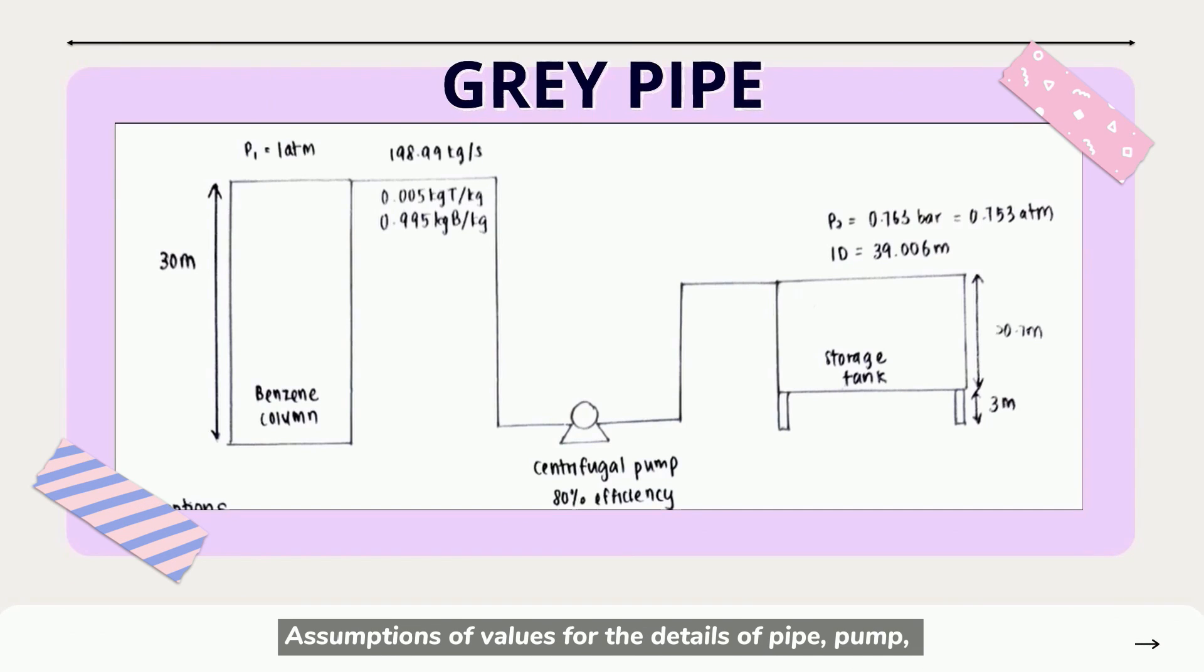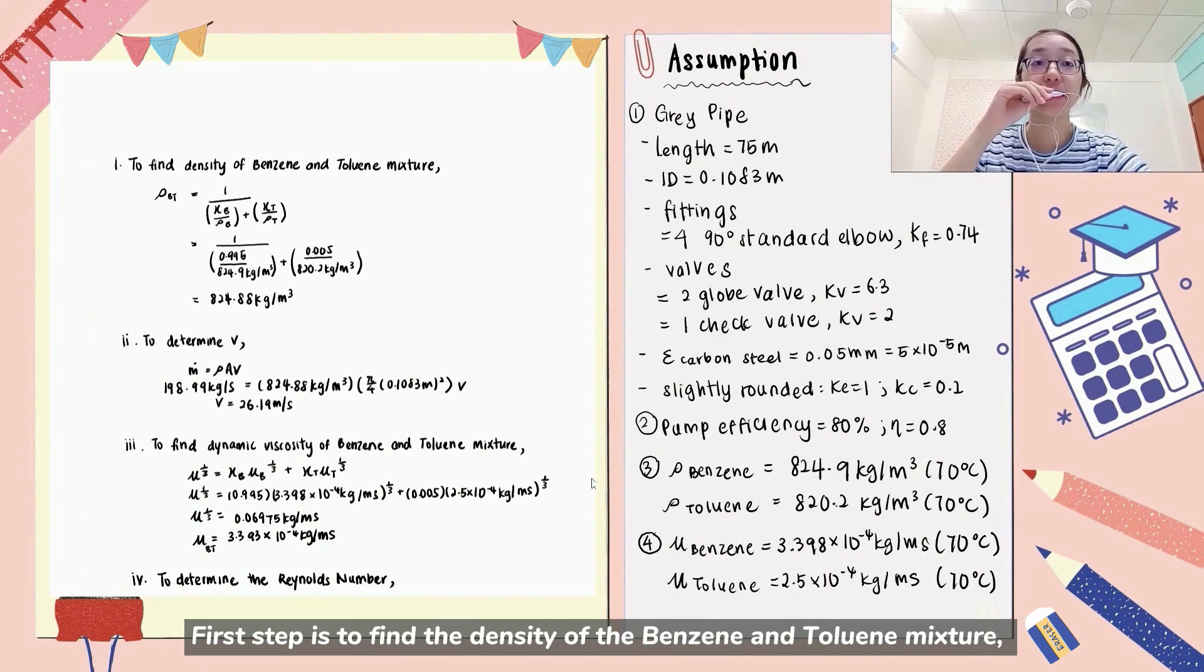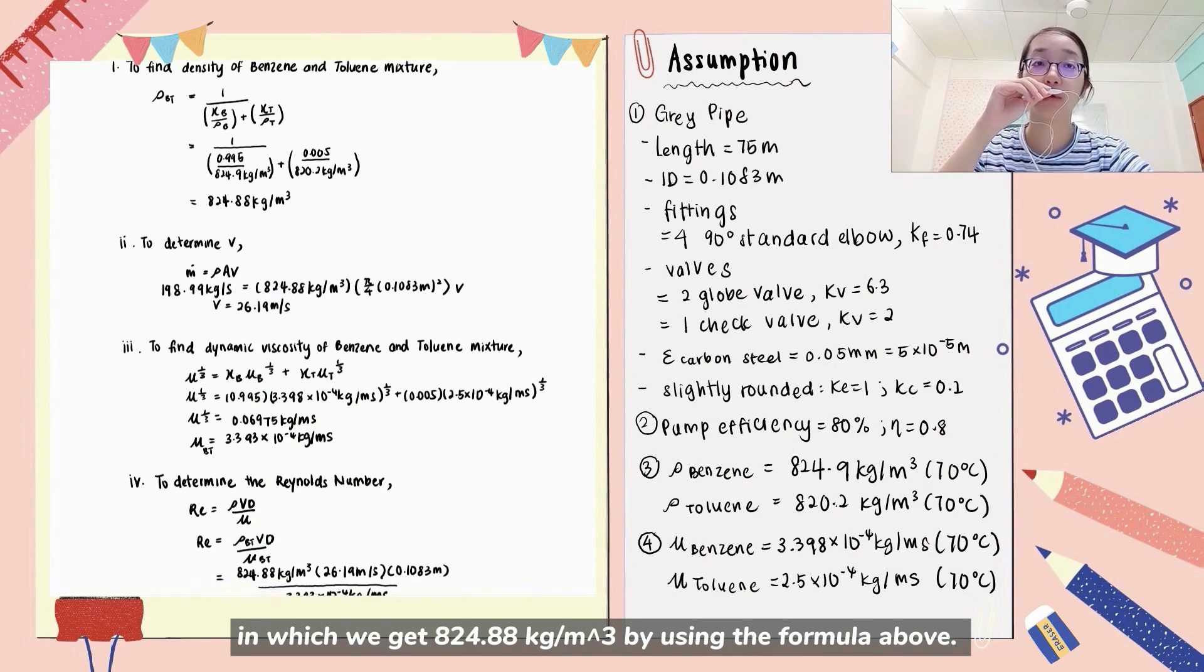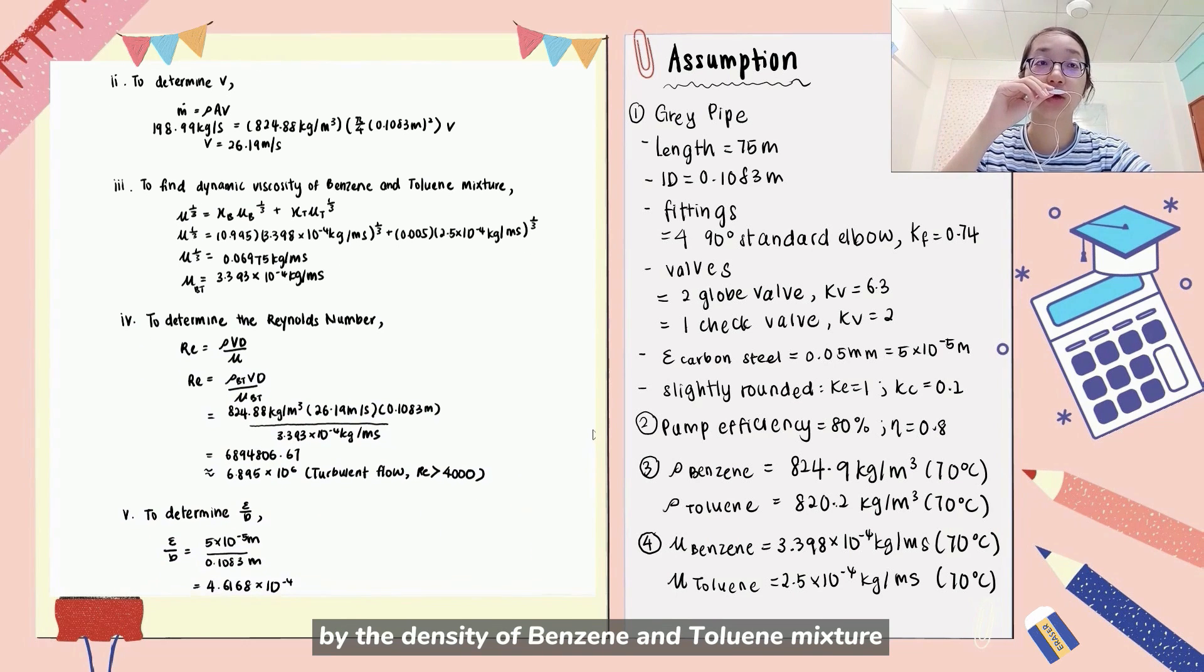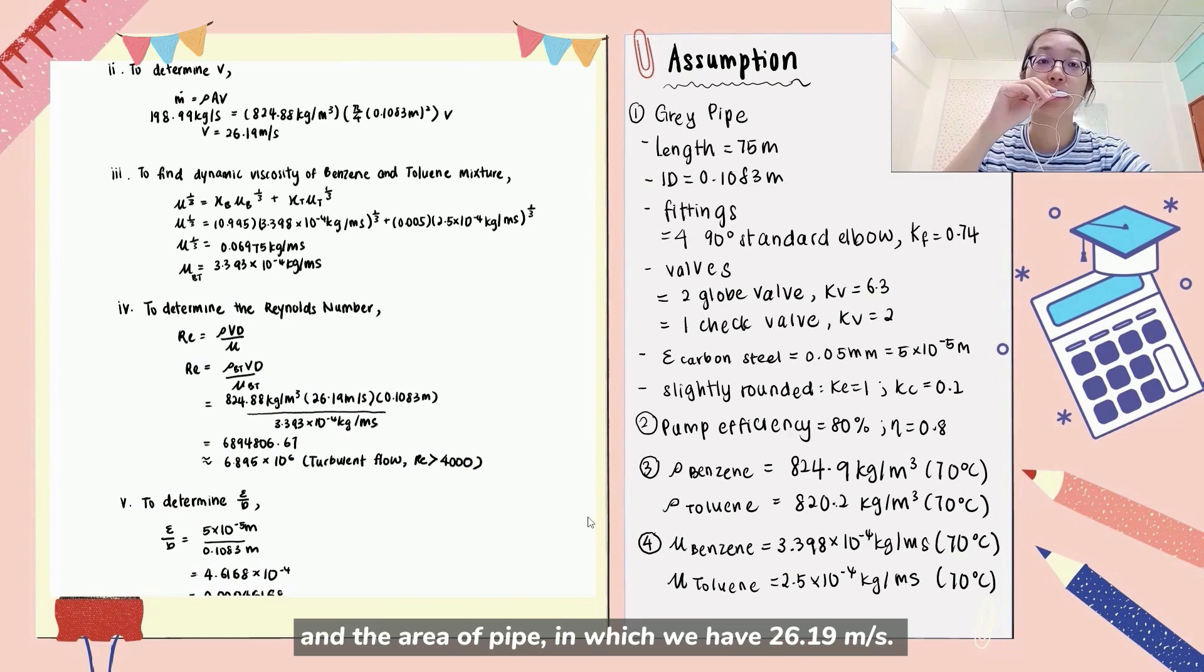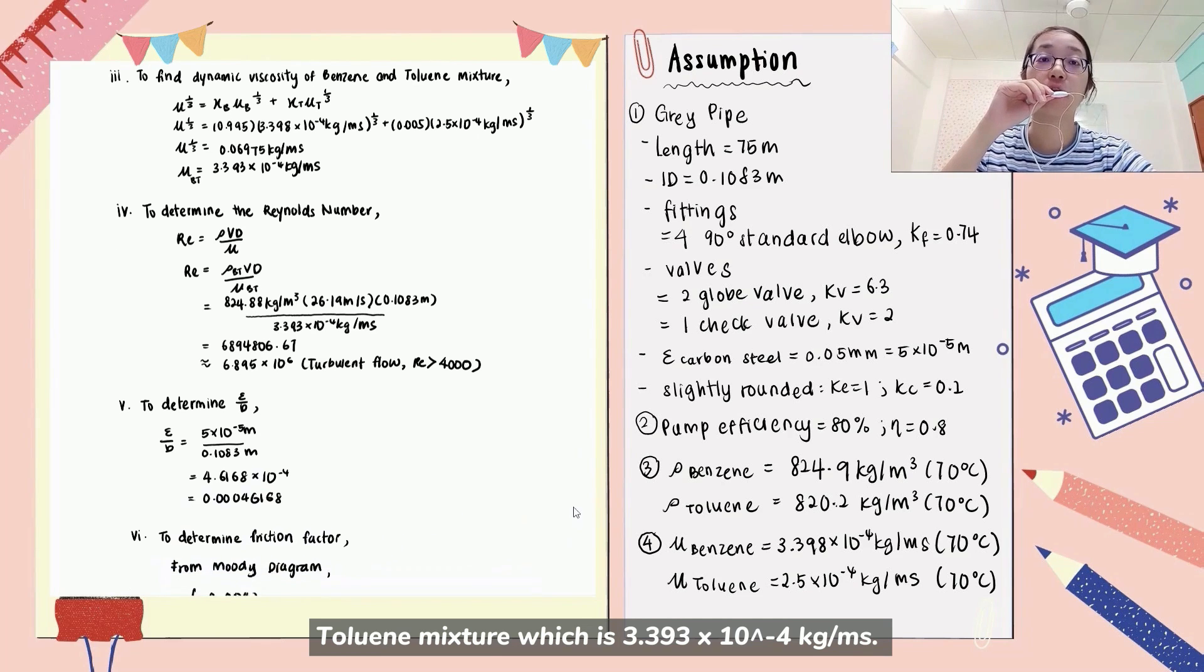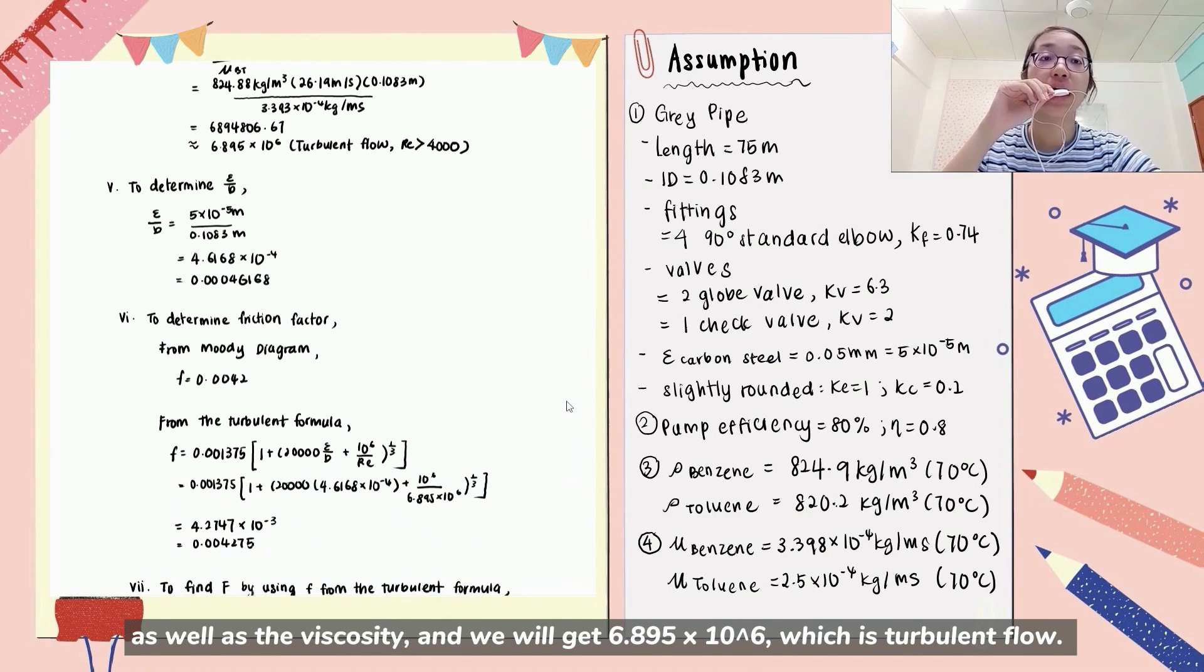Let's have a look at the grey pipe. Assumptions of values for the details of pipe, pump density and viscosity are made as above. First step is to find the density of the benzene and toluene mixture in which we get 824.88 kg per meter cube by using the formula above. Secondly, the velocity can be determined through dividing the mass flow rate by the density of benzene and toluene mixture and the area of pipe in which we have 26.19 meter per second. Thirdly, is to find the dynamic viscosity of the benzene and toluene mixture which is 3.393 times 10 to the power of negative 4 kg per meter second. To determine the Reynolds number, substitute value of density, velocity, inner diameter as well as the viscosity and we will get 6.895 times 10 to the power of 6 which is turbulent flow.